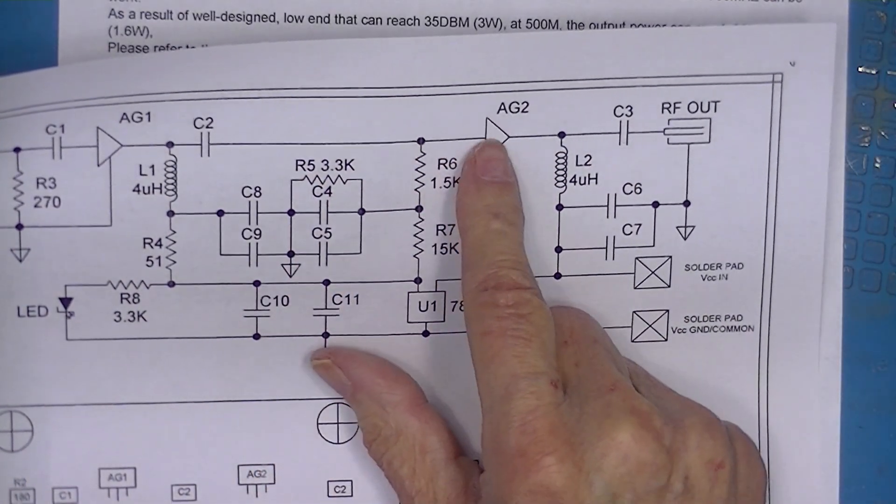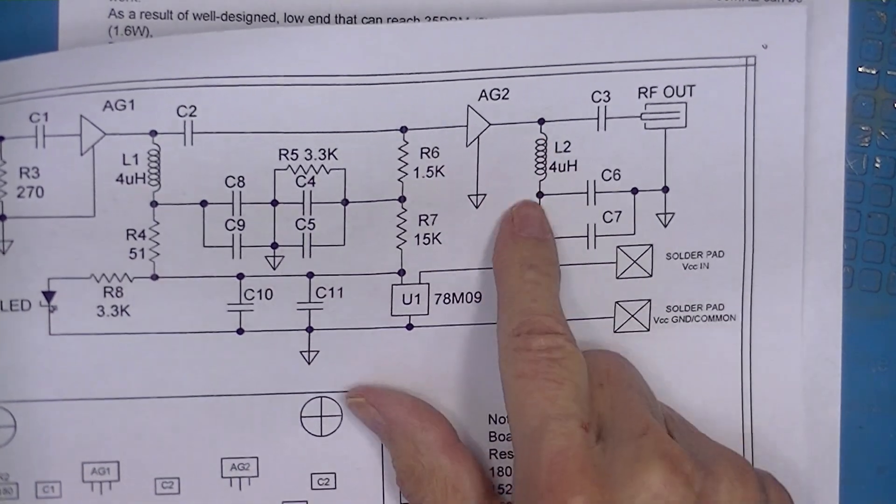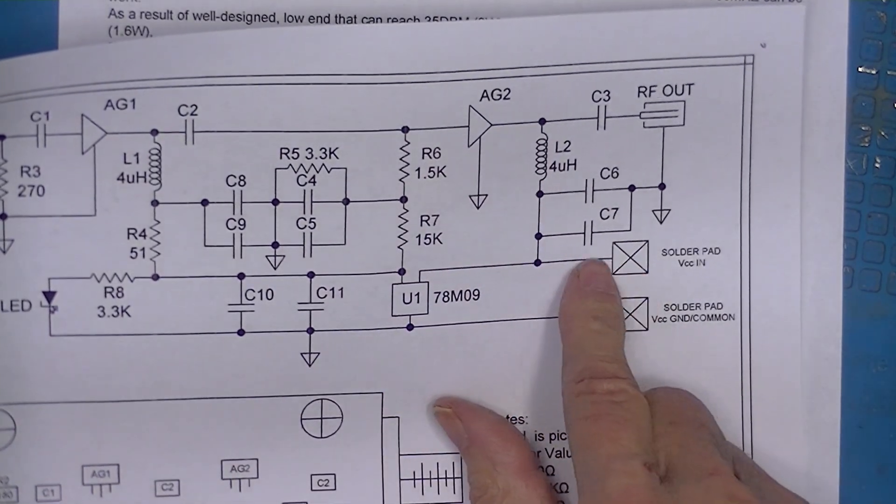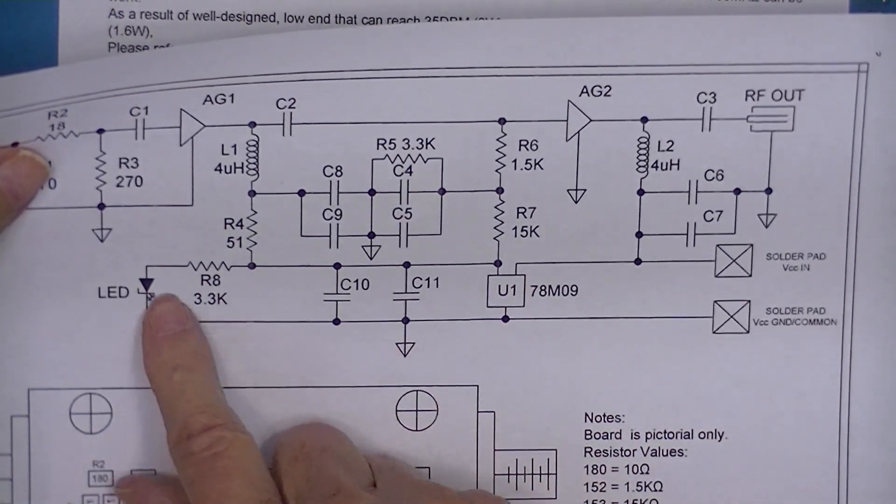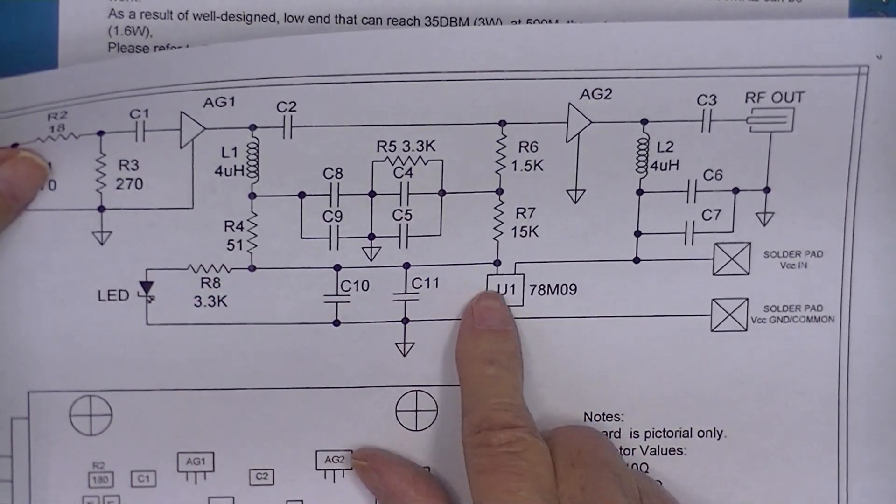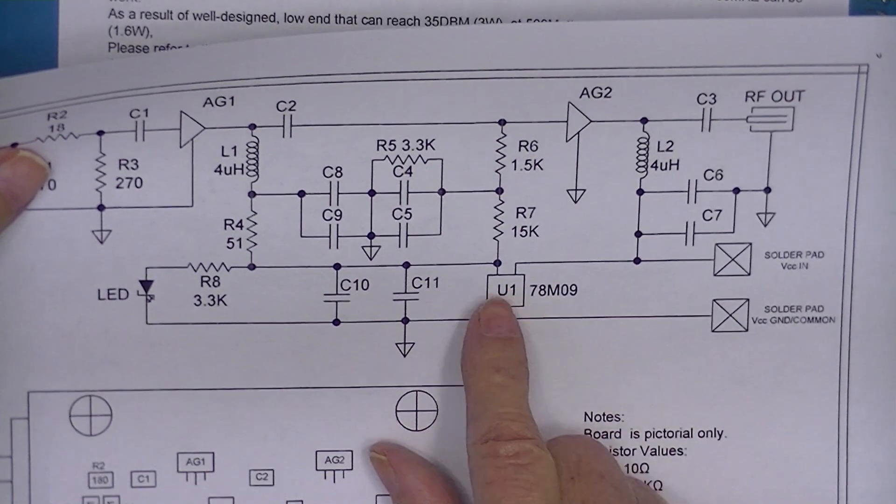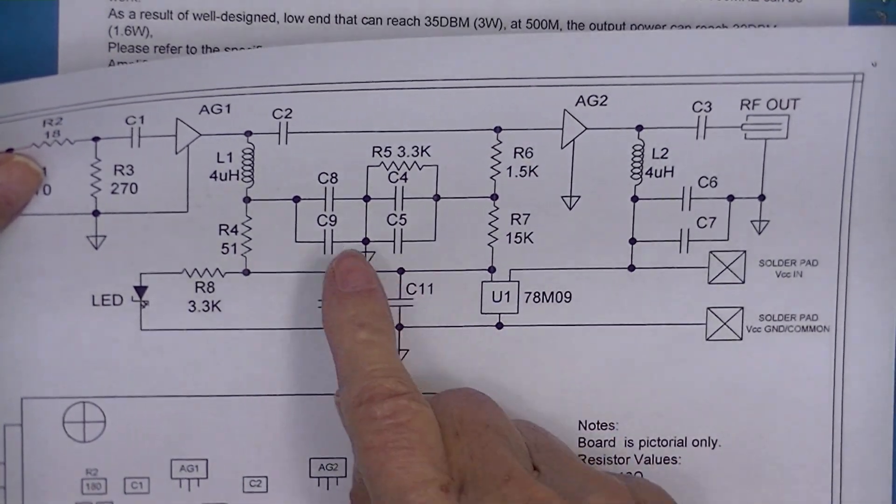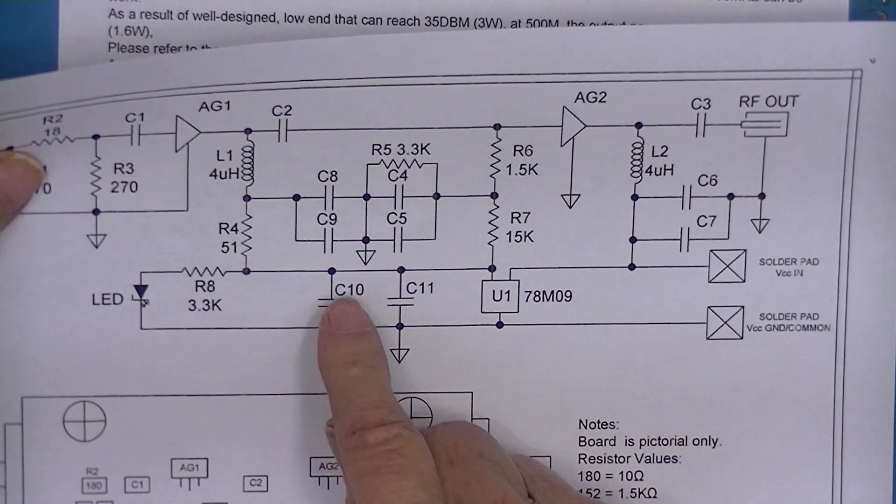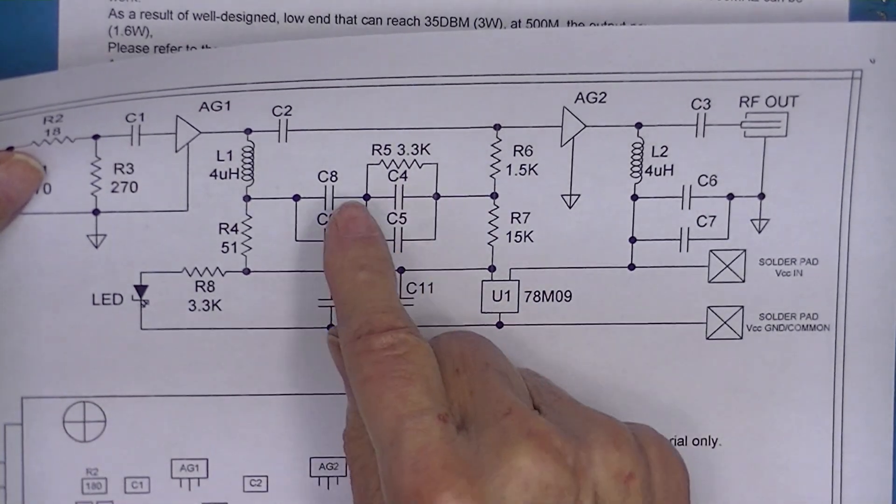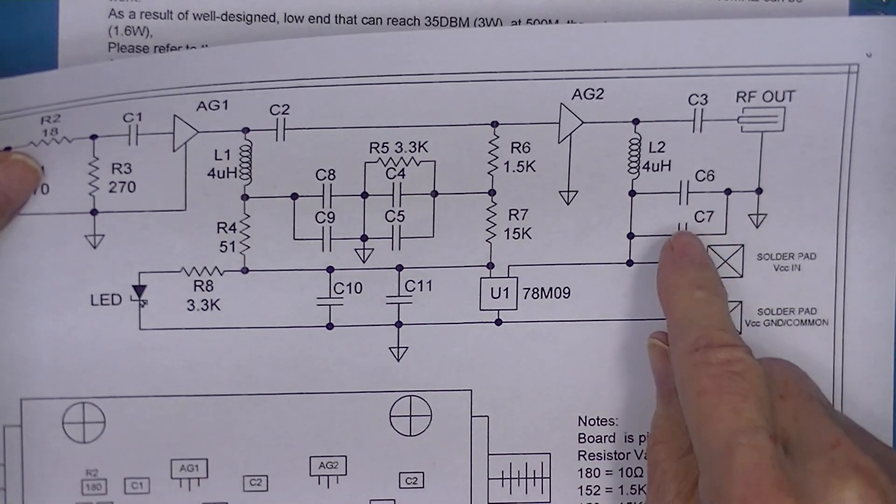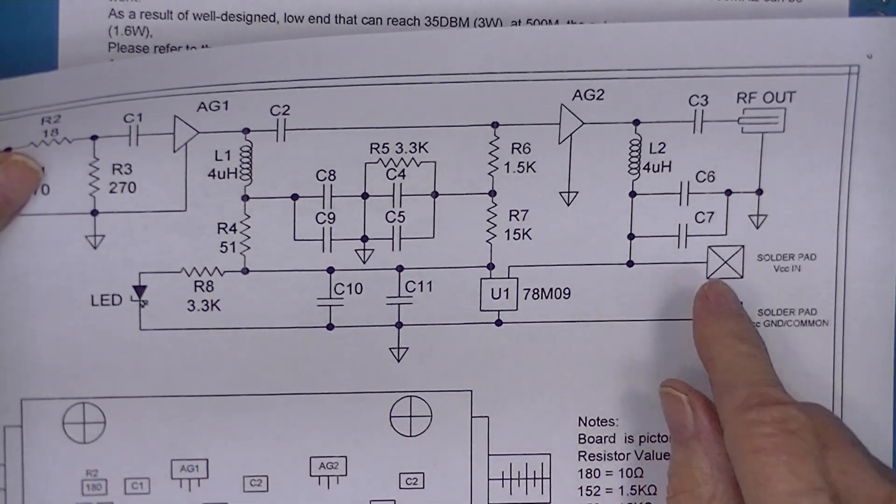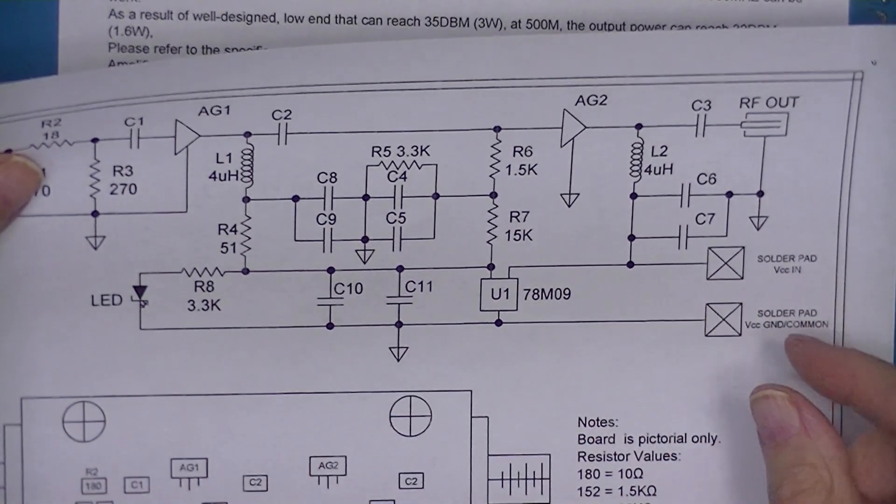The second stage is powered directly through a choke from the input. And there's also an LED and a diode powered at 9 volts. There's a bunch of bypass capacitors. And they come in pairs: 10 and 11, 4 and 5, and so on. These are invariably a large and small value in parallel.